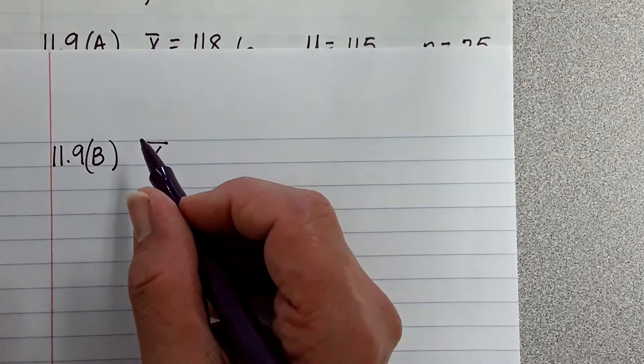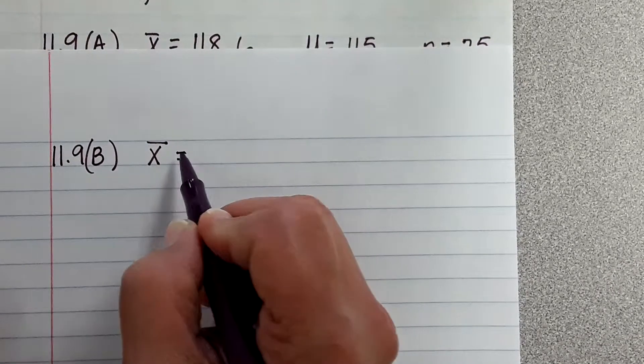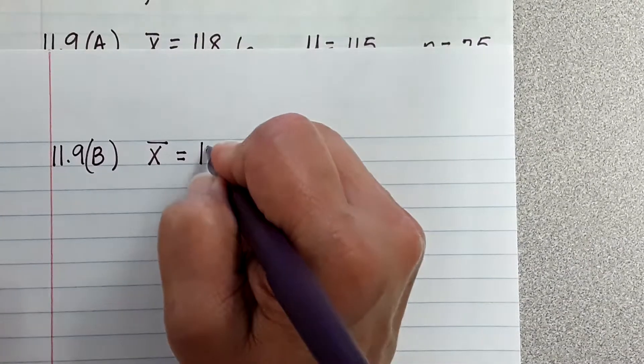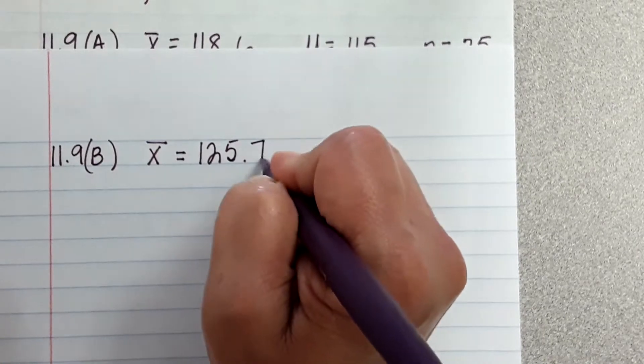Okay, but what's the... Oh sorry, I'm looking at the wrong problem. What's the... So we're in 11.9b, so the x-bar this time is 125.7.